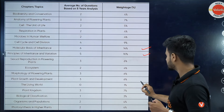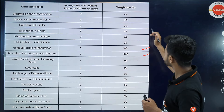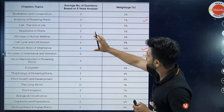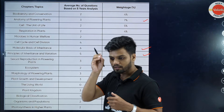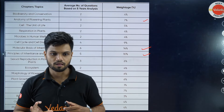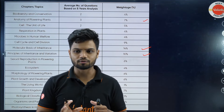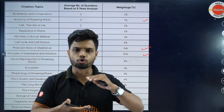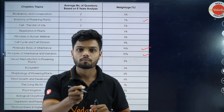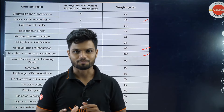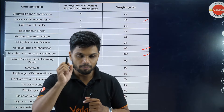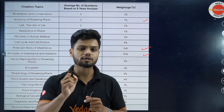After Principles and Molecular Basis, the next highest weightage goes to Anatomy of Flowering Plants and Morphology of Flowering Plants. But when we talk about a particular chapter group, the highest weightage will always go to Plant Physiology. So learn Plant Physiology very well first of all.